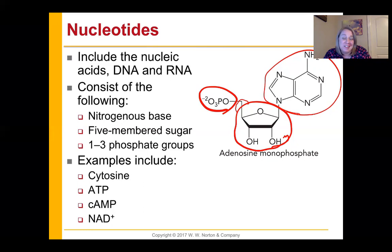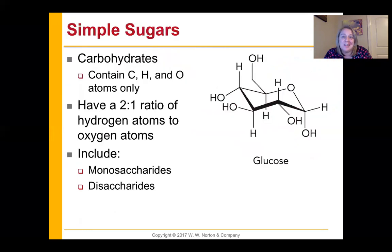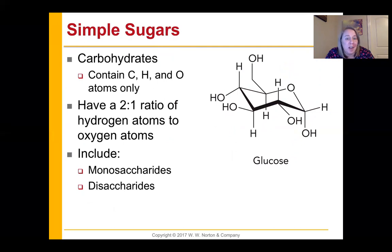Carbohydrates contain only carbon, hydrogen, and oxygen atoms — that's it. They have a ratio of two-to-one hydrogen to oxygen atoms. You're going to see monosaccharides and disaccharides — the difference is how many rings: monosaccharides have only one ring, disaccharides have two rings hooked together. Glucose is a monosaccharide.